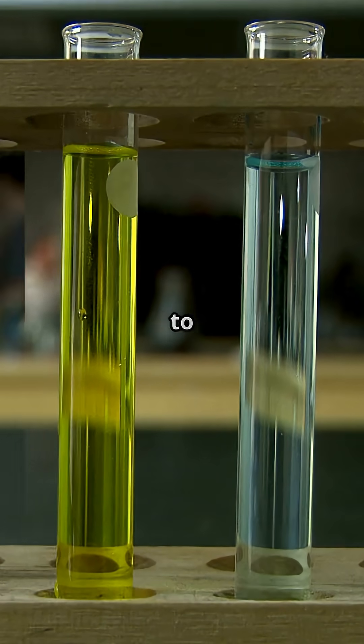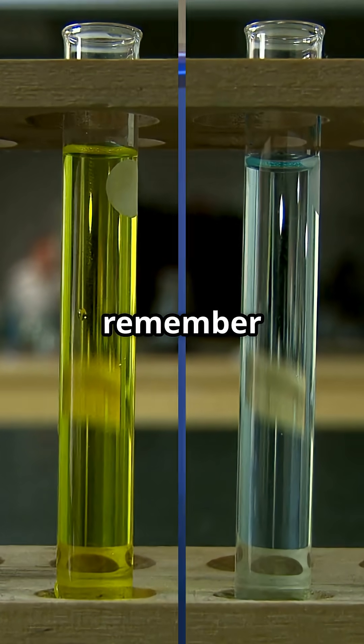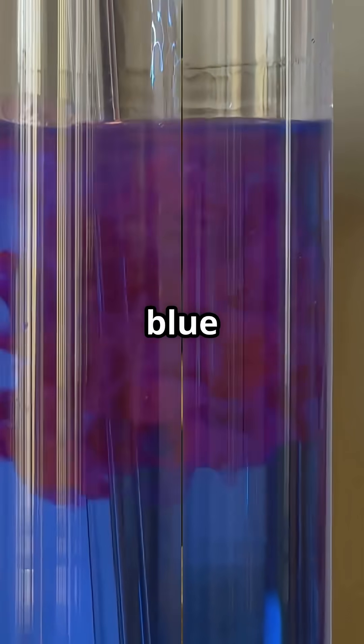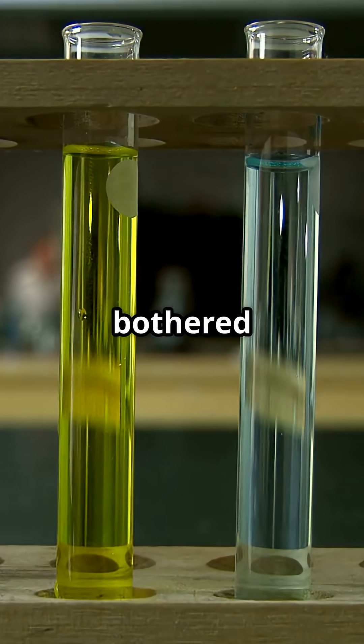So, next time you need to spot an acid or a base, remember: Blue turns red for acids, red turns blue for bases, and neutrals? Not bothered at all.